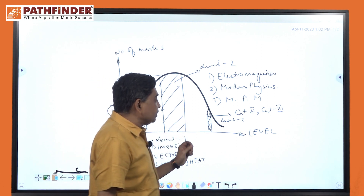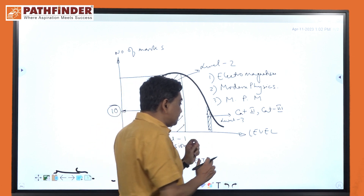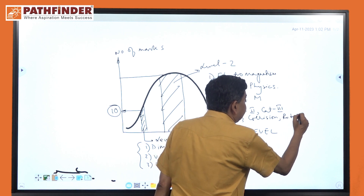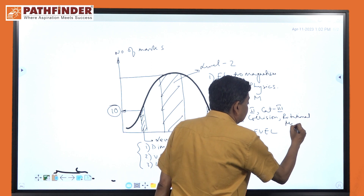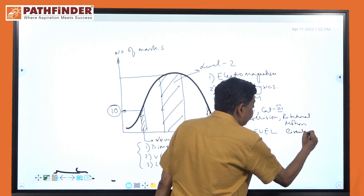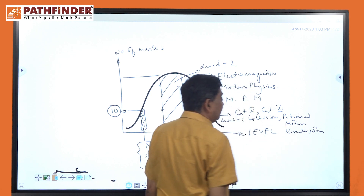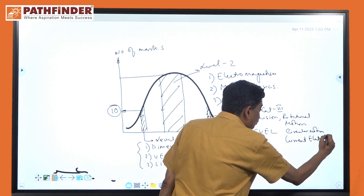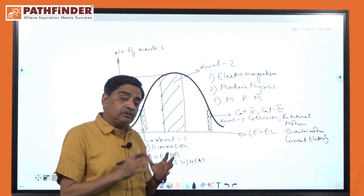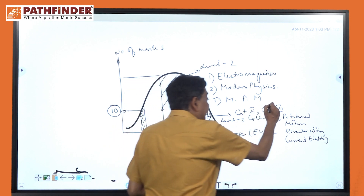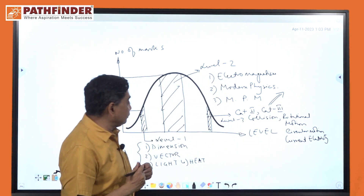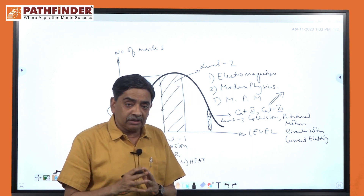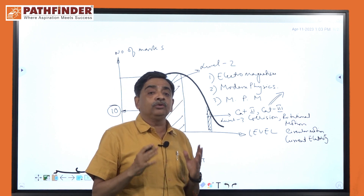Level 3 is category 3, which is more challenging. Topics here include collision — specifically collision problems — rotational motion, and circular motion. I want to tell you separately how we can improve and do well in category 3.